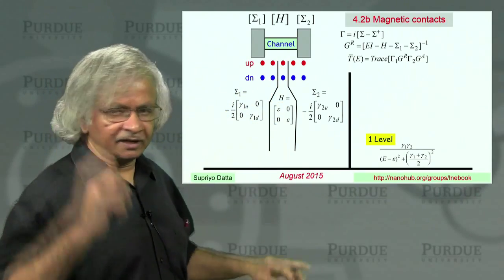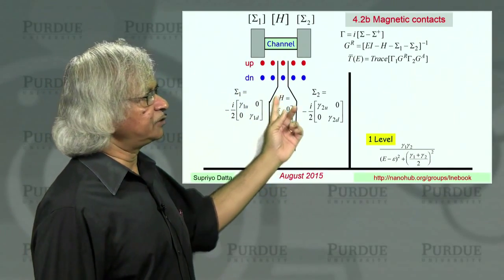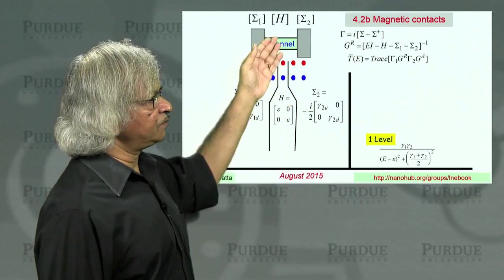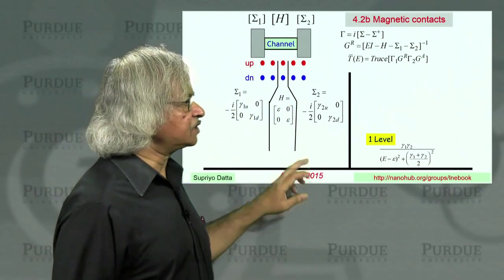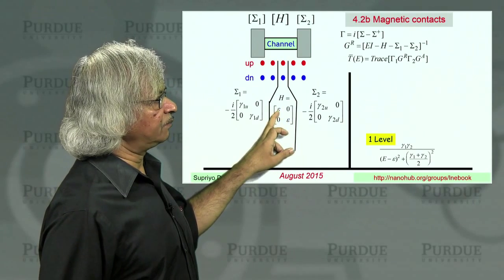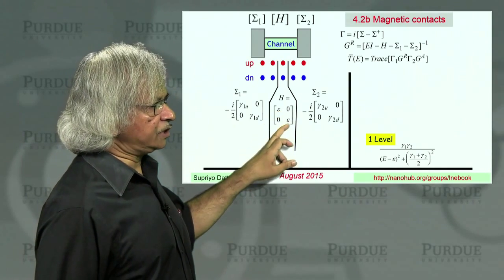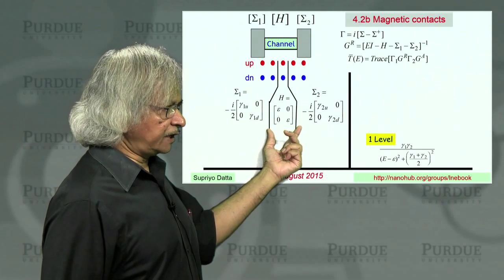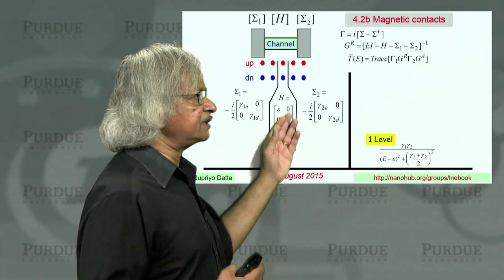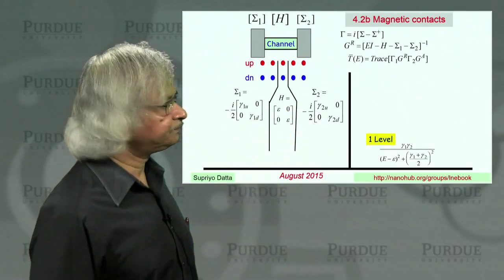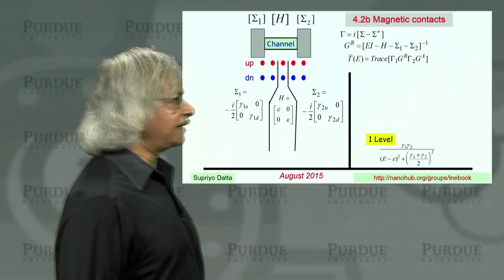So you cannot just handle one spin and multiply the result by 2. What you have to do is explicitly take into account the two channels, the two spins, the up and down. So now if you try to write the H, instead of being just a number epsilon, you'll now have a 2 by 2 matrix. And you're assuming this is just an ordinary non-magnetic channel. And so it's epsilon, epsilon both on the diagonal.